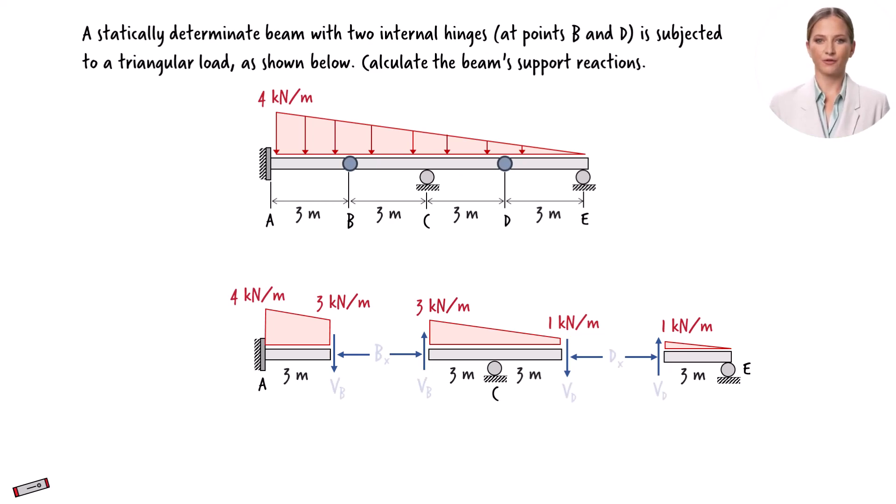Let's assign labels to these force magnitudes. For the left hinge, the axial force magnitude is denoted as Bx and the shear force as Vb. For the right hinge, the axial force is labeled Dx and the shear force is represented by Vd.